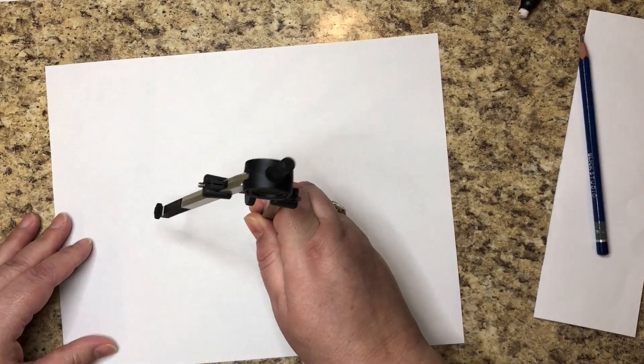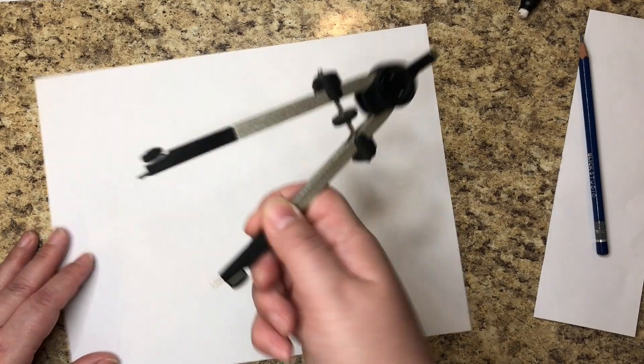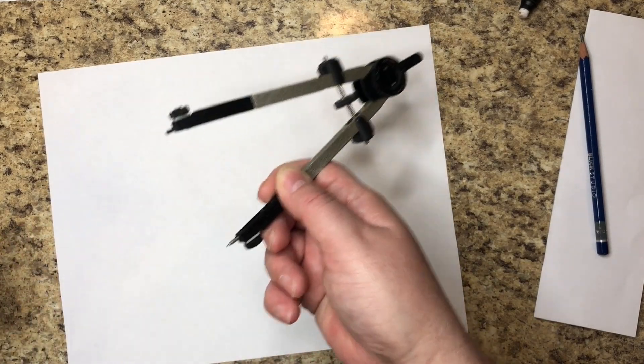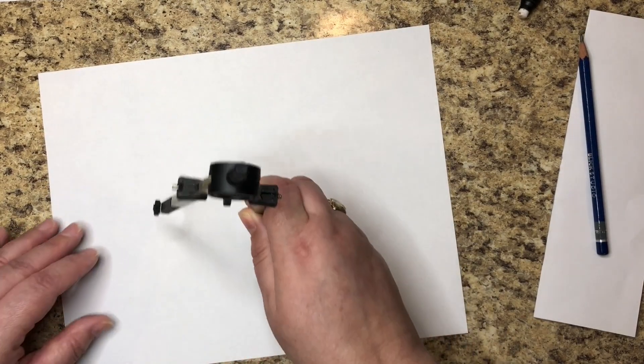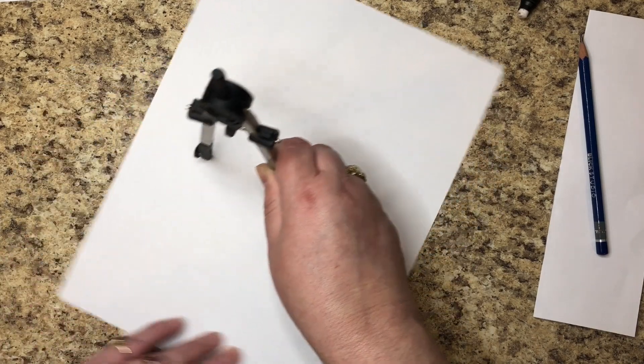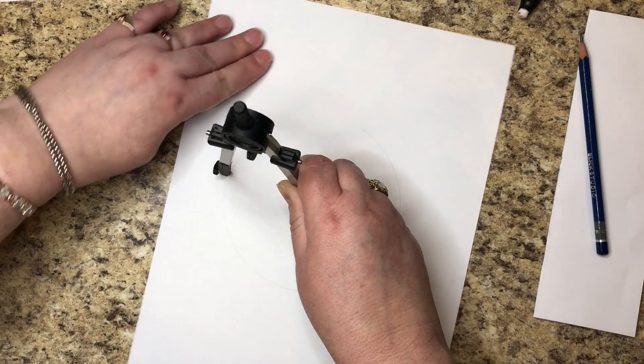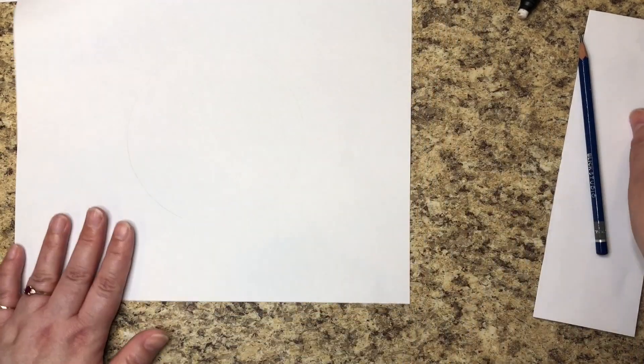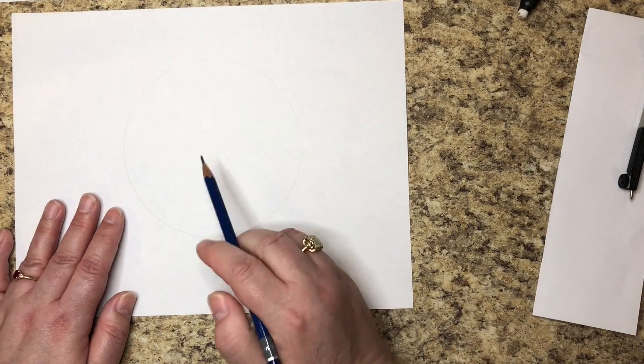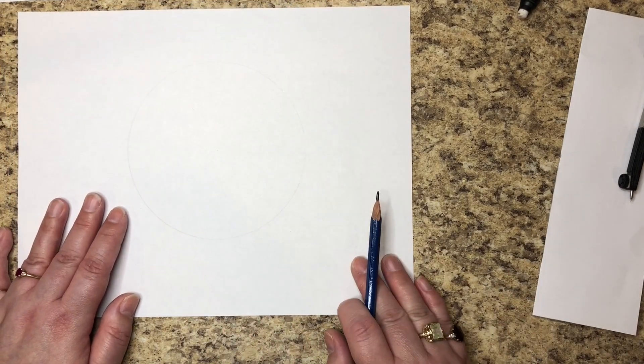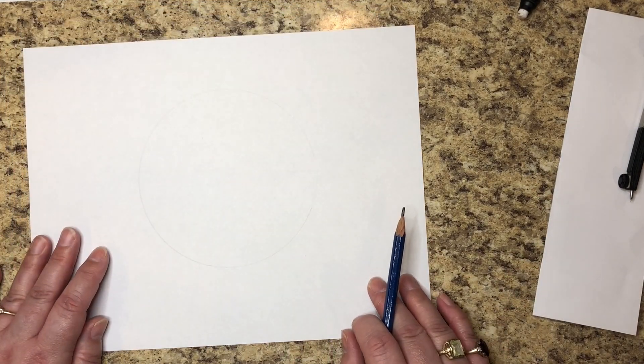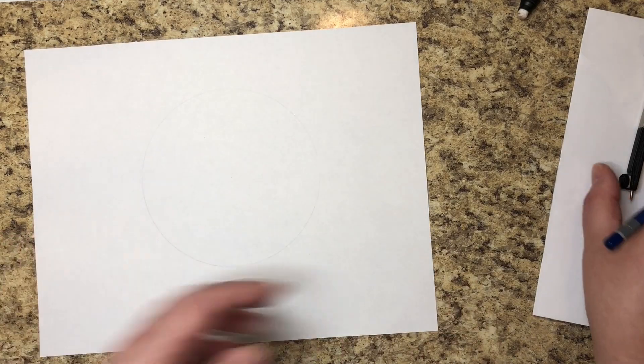Okay, so I'm going to draw a circle with my compass. If you don't have a compass, again you can use two pencils tied together with a string and it'll work just as well. All right, there's our circle. Now we need to find the center of the circle and we're going to use the same technique that we just learned.